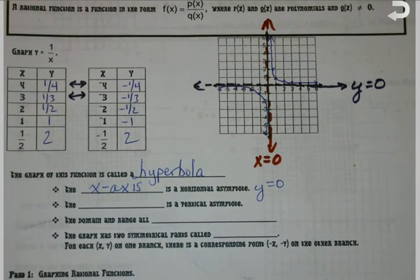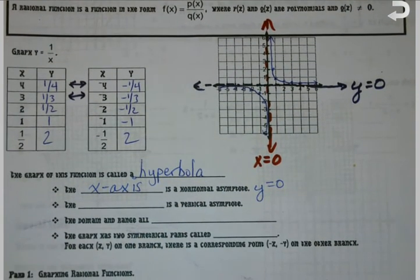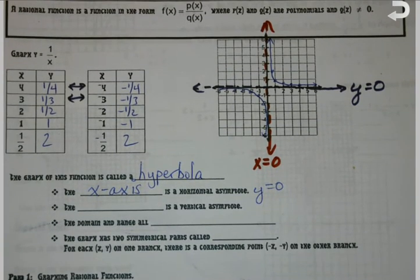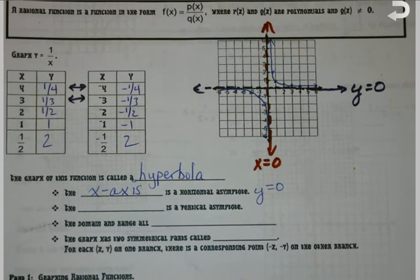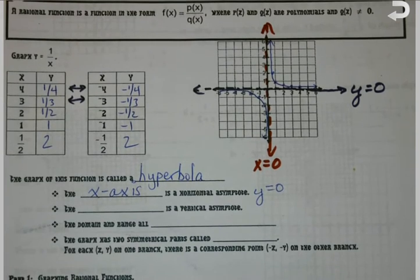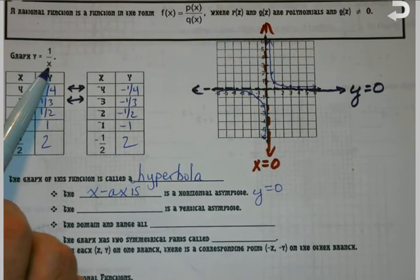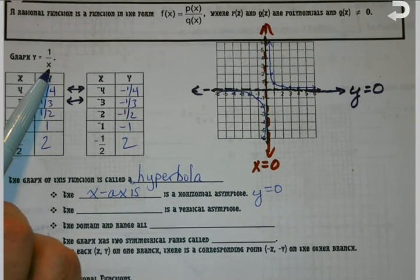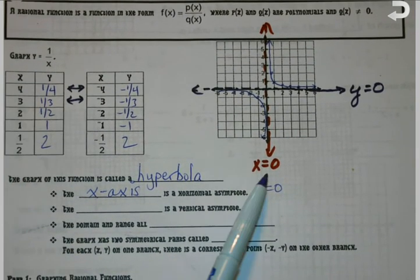As I plot these, and you'll see I went ahead and plotted the points and drew them over here to the right, you notice that they never cross either of the axes. They get very close, but they never actually cross. And that's because there's certain values you'll never get. For instance, looking at 1 over x, what if I plugged in 0 for x? I'd get an error message because it's undefined.